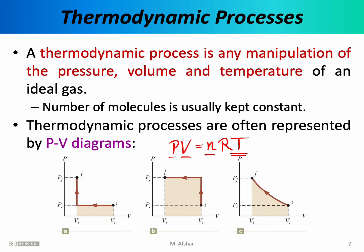For example, if we know the number of moles in the gas, and we know what the initial volume and initial pressure are, then we can, in principle, use the ideal gas law to find what the initial temperature is. Therefore, a PV diagram really provides a rather complete description of a thermodynamic process.